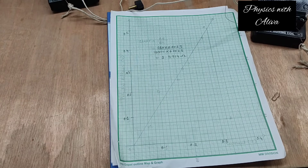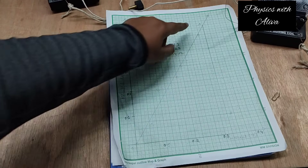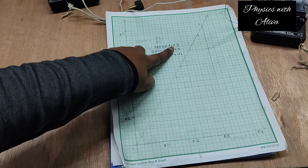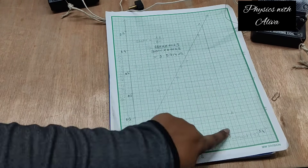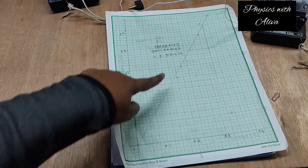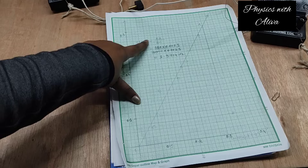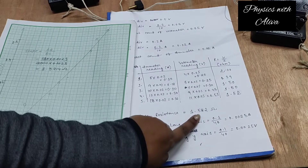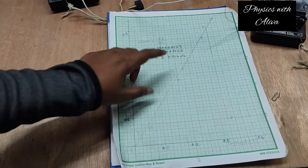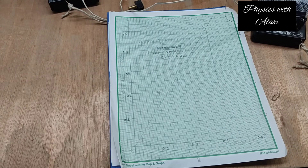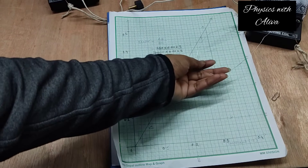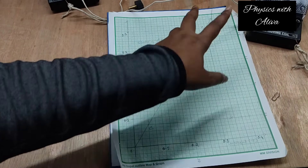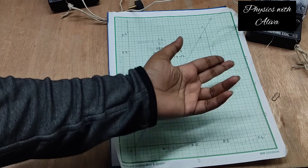From this graph we have calculated the slope. We have drawn a triangle with vertices A, B, and C. The length of AB is 110 divisions multiplied by the smallest division value, and the length of BC is 70 small divisions multiplied by the smallest division value. By calculating this we have got a resistance of 1.5714 ohms from the graph. Since the aim is to calculate resistance per unit length, we have to measure the length of this resistance wire using a meter scale and then divide the resistance by the length to get resistance per centimeter.